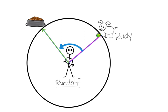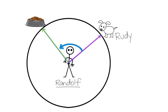Now Rudy wants to get to the food dish, and if Rudy were to walk around the circle to the food dish, he'd walk a particular length. Today we're not going to be talking about the length that Rudy walks — we're going to talk about what's called the measure of this arc from Rudy to the food dish. We're going to talk about the measure of it, which is not the same thing as the length.